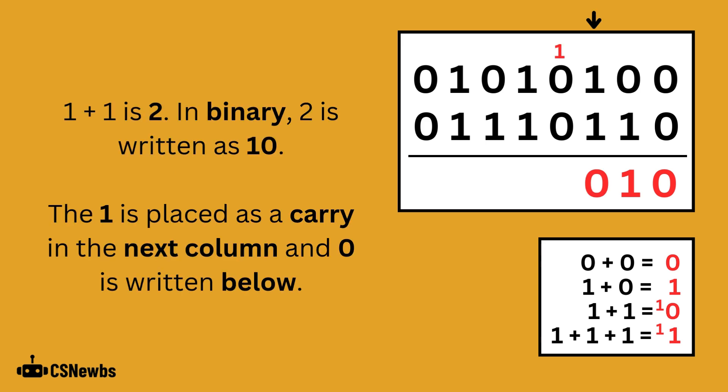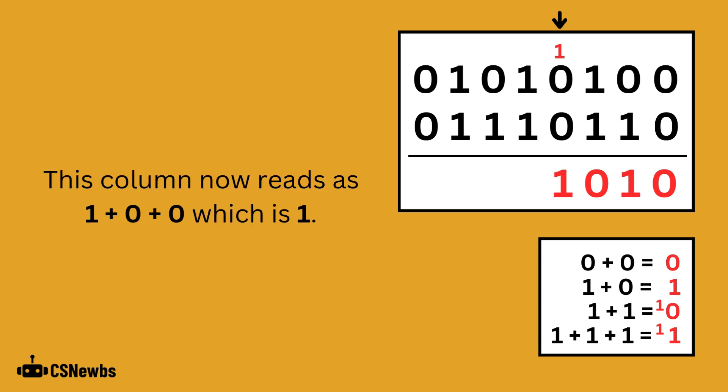1 plus 1 is 2. In binary, 2 is written as 1, 0. The 1 is placed as a carry in the next column, and the 0 is written below. This column now reads as 1 plus 0 plus 0, which is equal to 1.